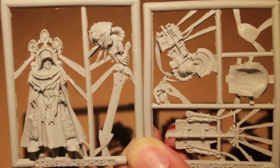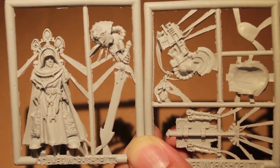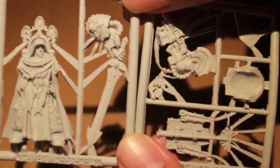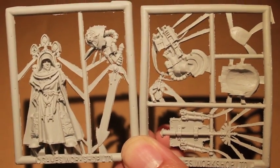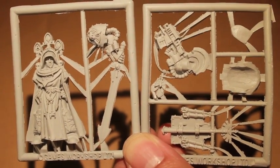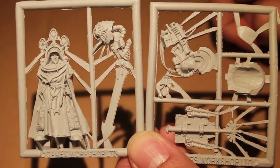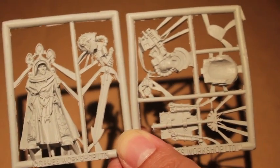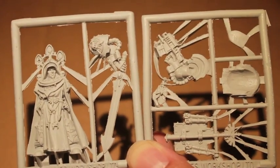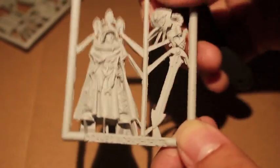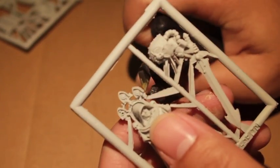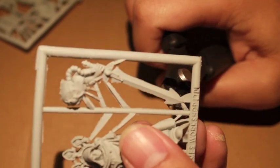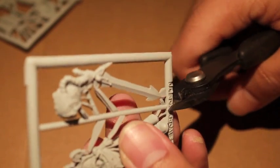So here we've got two sprues of this Belial figure and a base for him to go on. Now the Deathwing, in order to get the most out of them, a lot of people say you should get this guy Belial, and he's a fantastic sculpt. I'm just kind of bummed that he's in Finecast, but we'll see how bad the damage is in just a second.